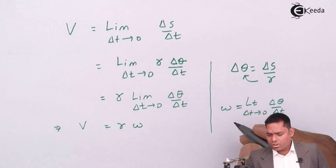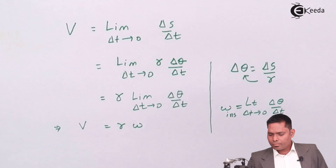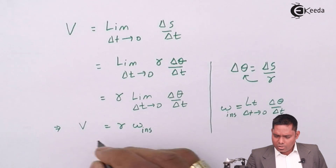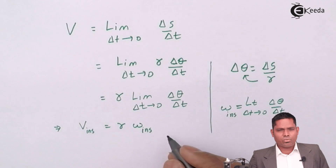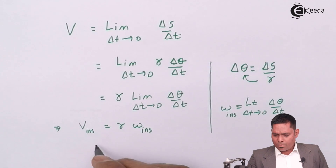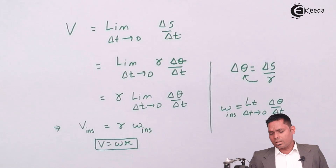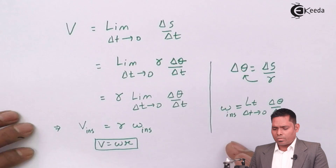Omega at that particular instant is instantaneous, and the linear velocity at that instant is also instantaneous. In general, the velocity at any point is V equals omega R. This is the scalar relationship: linear velocity equals angular velocity times the radius of the circle.